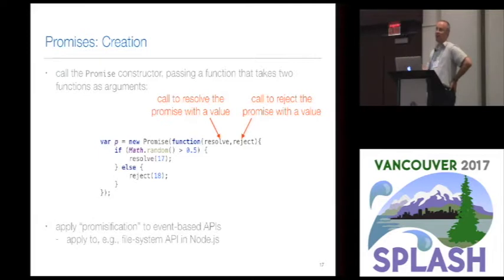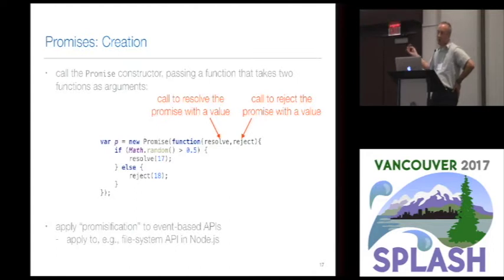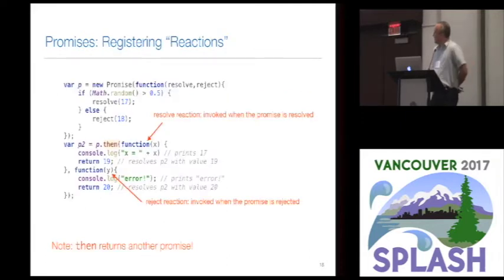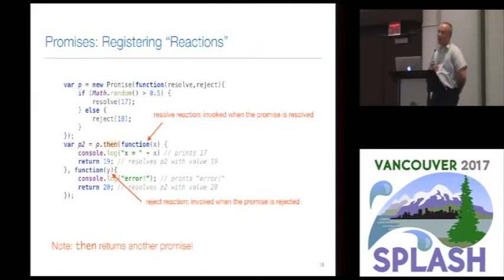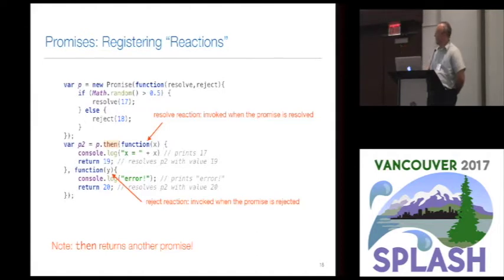In more realistic code, what happens is you call an API of a library — like a file system API — that will return a promise. That's sometimes referred to as promisification, and you can apply that to many APIs, for example the Node.js file system API. Once you have created promises, either by calling the promise constructor or by calling an API function, you can associate reactions with promises by invoking a function called then. You give then two arguments: a resolve reaction, which is invoked when the promise is successfully resolved, and a reject reaction, which is invoked if the promise is rejected.